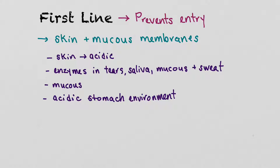Our stomach is a very acidic environment, and this serves two purposes. First, we need acid to activate the enzyme pepsin, which begins digesting protein. Second, acid acts as a line of defense — if we ingest a pathogen through food or water, the stomach acid works to kill it. Unfortunately, if too much of the pathogen is ingested, not all of it can be killed, and that's when we can get a foodborne or waterborne illness.